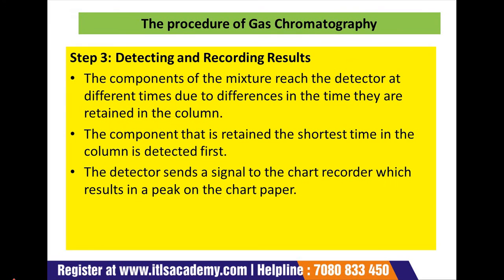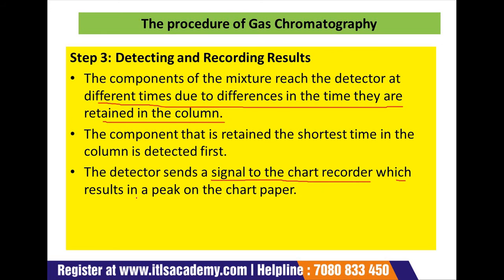The next step is detecting and recording results. The components of the mixture reach and emerge from the detector at different times due to differences in the time they are retained in the column. The component retained the shortest time in the column is detected first; the component retained the longest time is detected last. The detector sends a signal to the chart recorder, which results in a peak on the chart paper. The component detected first is recorded first, and the component detected last is recorded last.